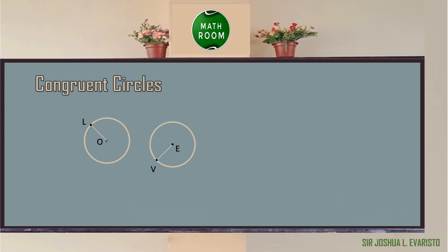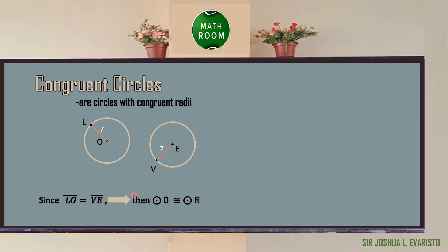Let us now learn about congruent circles. These are circles with congruent radii. In the given figure, segment LO is the radius of circle O and segment VE is the radius of circle E. Since segment LO is equal to segment VE — they are both 7 — then we can conclude that circle O is congruent to circle E.